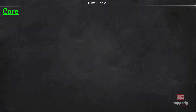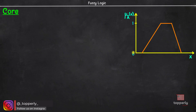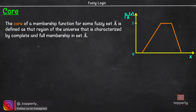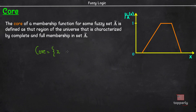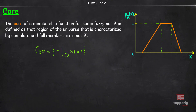First, we will learn about core. For that, let us consider a fuzzy set A with a membership function as shown here. Then, the core comprises of those elements X in the universe such that the membership value of X in the fuzzy set A is equal to 1. If you see in this graph, for this region, the membership value is equal to 1. So this region is called core.